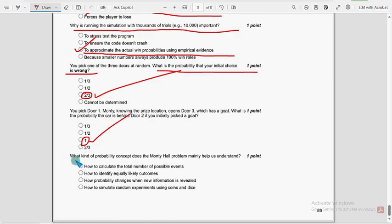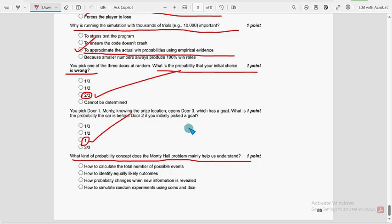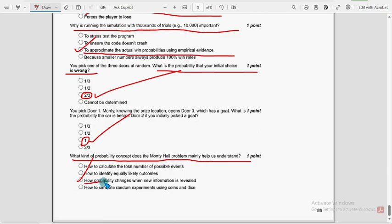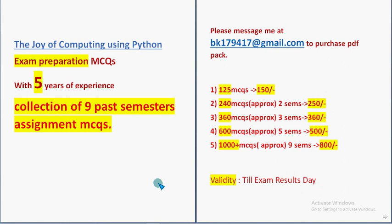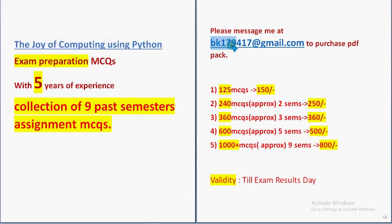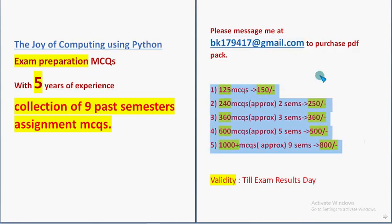Last question: what kind of probability concept does the Monty Hall problem mainly help us understand? For the final question, the third option — how probability changes when new information is revealed — is the probable solution. These are the most probable solutions for the week 5 assignment of Joy of Computing using Python. Hope this video was helpful. Definitely subscribe, like the video, and share with your friends. Don't forget to purchase the huge MCQs exam preparation pack — mail BK179417 at gmail.com. That's it guys, keep supporting us. Goodbye, thank you.